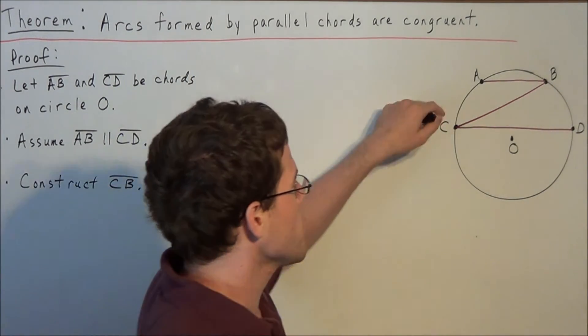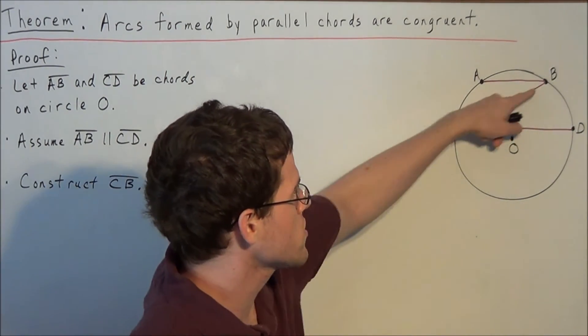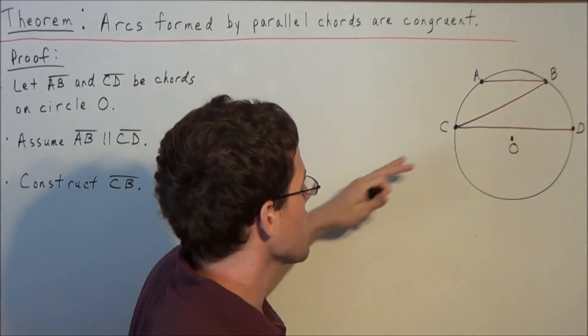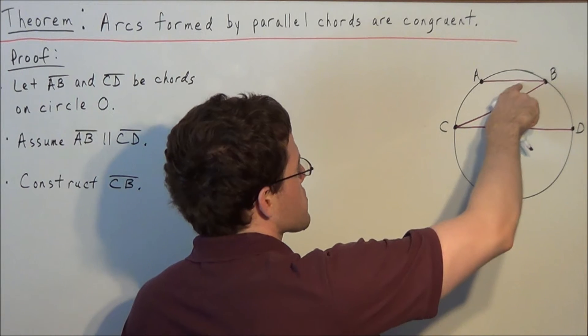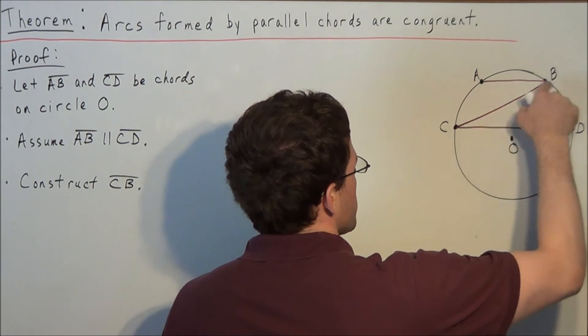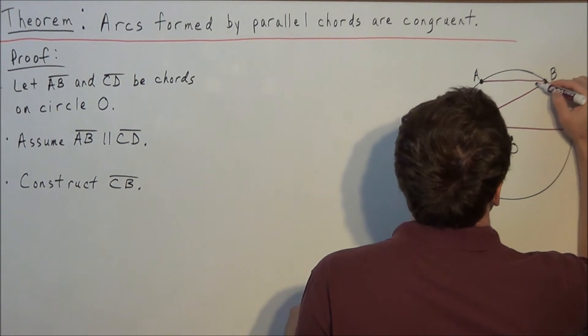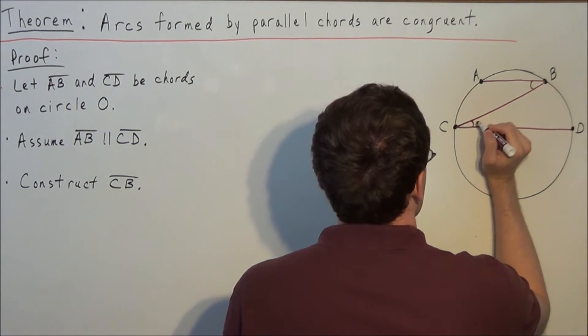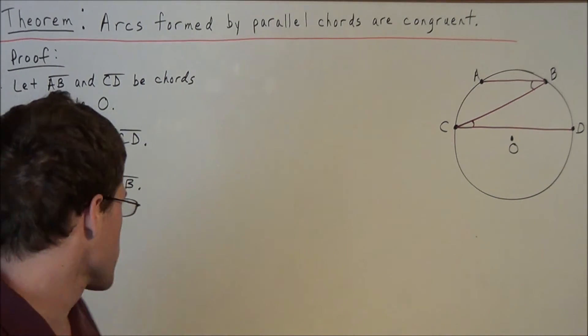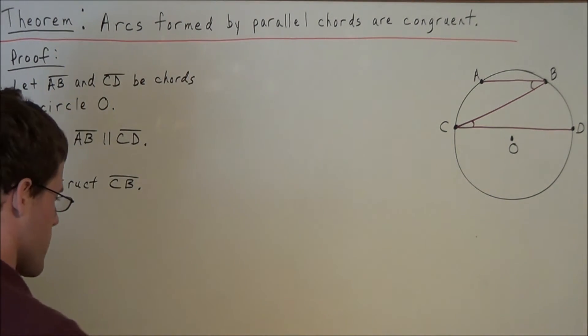Notice that this newly constructed line segment is a transversal, cutting across two parallel lines. So by the Alternate Interior Angles Theorem, we could say that angle ABC is congruent to angle DCB.